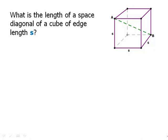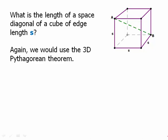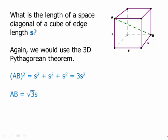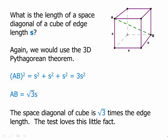What is the length of a space diagonal of a cube with edge length s? Well, same thing. We do the 3D Pythagorean theorem. AB squared equals s squared plus s squared plus s squared. And of course, that's 3s squared. Take a square root and we get root 3 times s. The space diagonal of the cube is root 3 times the edge length. The test loves that little fact.